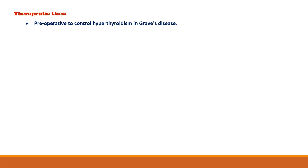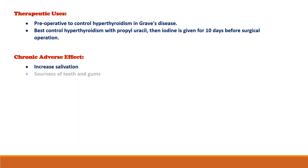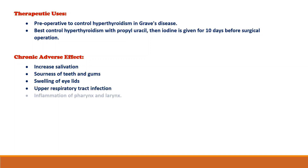Therapeutic uses include pre-operative control of hyperthyroidism in Graves' disease. Hyperthyroidism is first controlled with propylthiouracil, then iodine is given for 10 days after surgical operation. The chronic ADRs associated are increased salivation, soreness of teeth and gums, swelling of eyelids, upper respiratory tract infection, and inflammation of the pharynx and larynx.